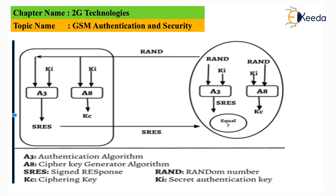On the left-hand side is a mobile phone; on the right-hand side is the network. The SIM card in the mobile phone already contains a key KI. The authentication center at the network generates a random number RAND and sends it to the mobile phone. The mobile phone also has algorithms A3, A5, and A8 inside the SIM. Using RAND, KI, and algorithm A3, it generates a signed response SRES. Using algorithm A8, KI, and RAND, it also generates a ciphering key KC.